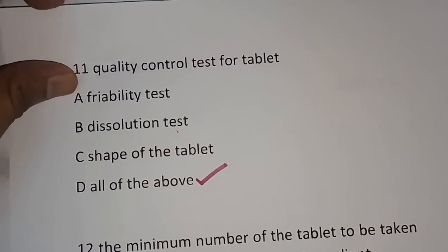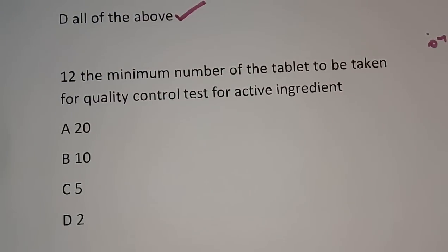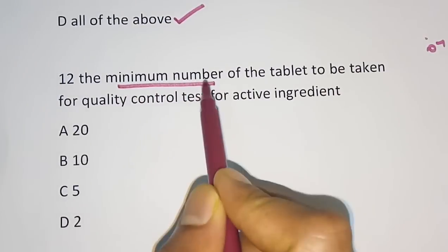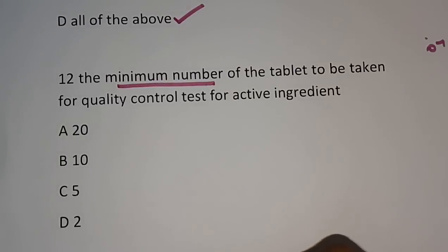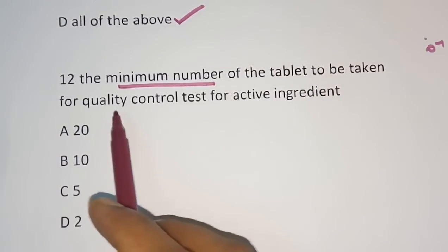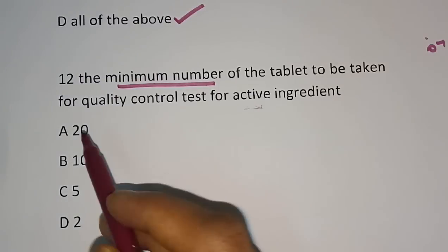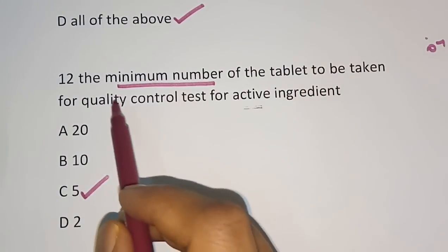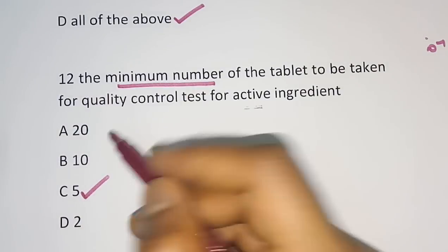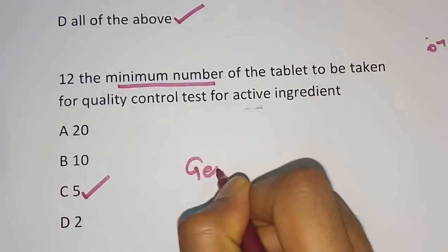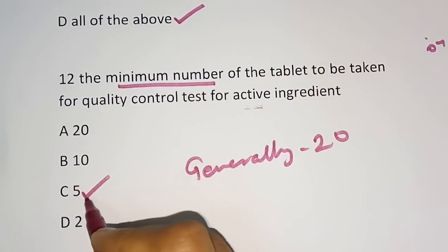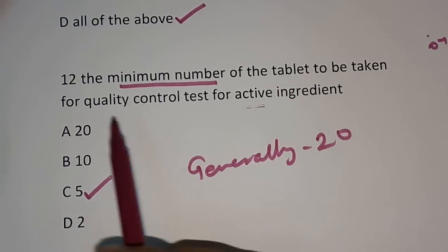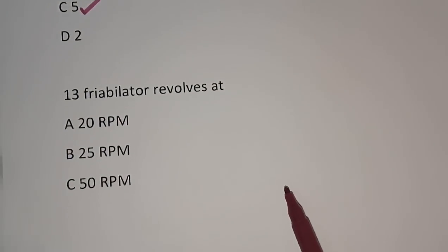Question number 12: The minimum number of tablets to be taken for the quality control test for the active ingredient. Options are 20, 10, 5, or 2. The correct answer is 5. Normally, 20 tablets are generally taken for QC testing, but the minimum required for testing the active ingredient is 5.